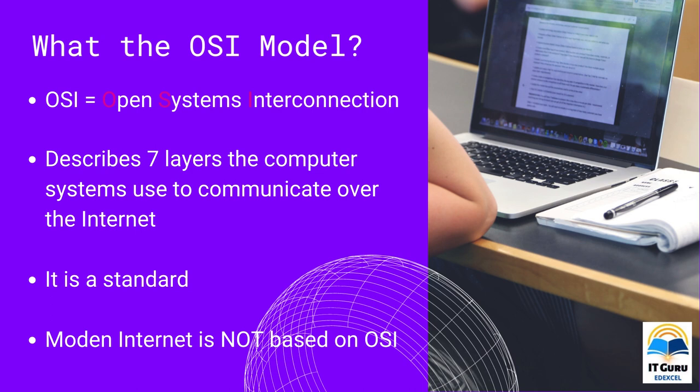The reference model describes seven layers a computer system uses to communicate over the internet. The OSI reference model came into existence only in 1983, long after the modern internet came into existence. Therefore, the modern internet is not based on the OSI model.